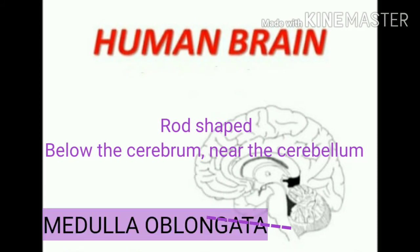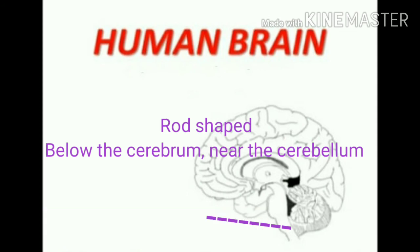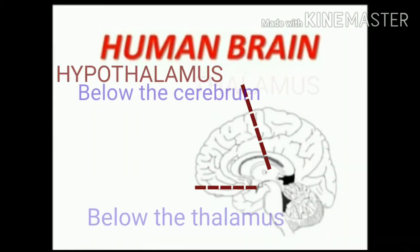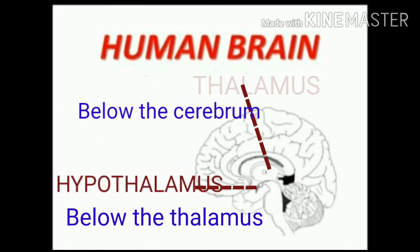The next part is the medulla oblongata. Do you see this part? It is like a rod shape. It is seen below the cerebrum and near to the cerebellum.